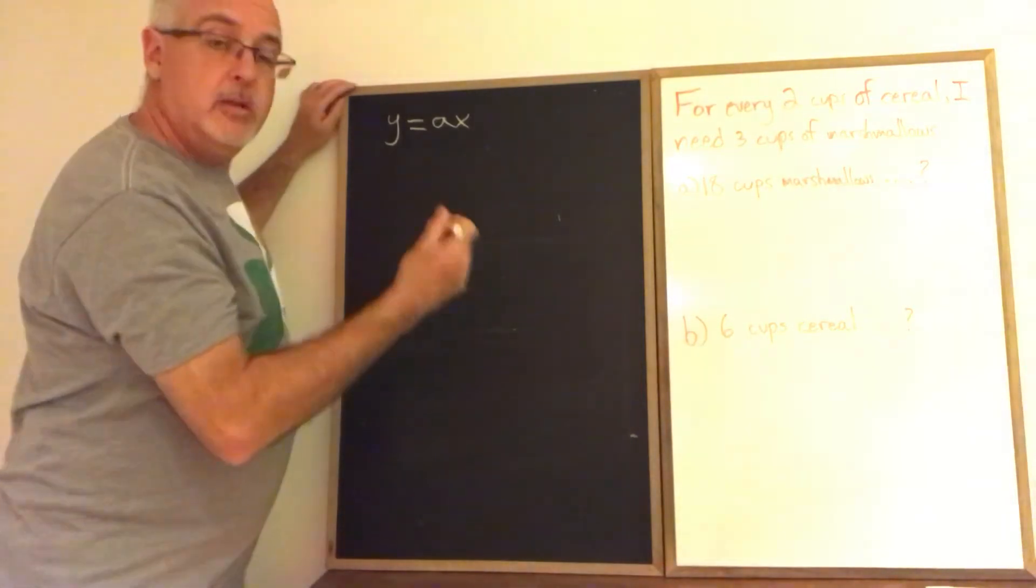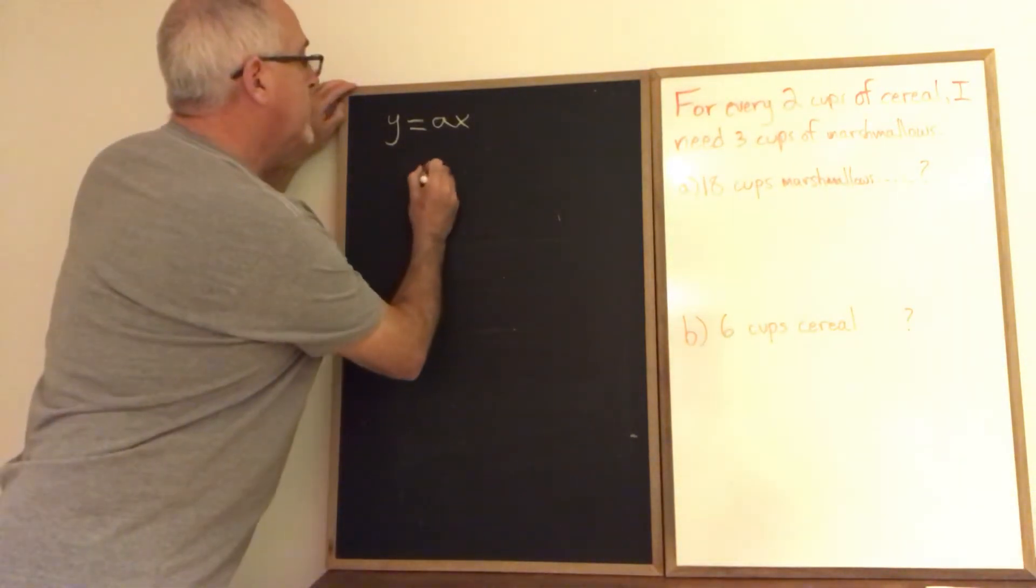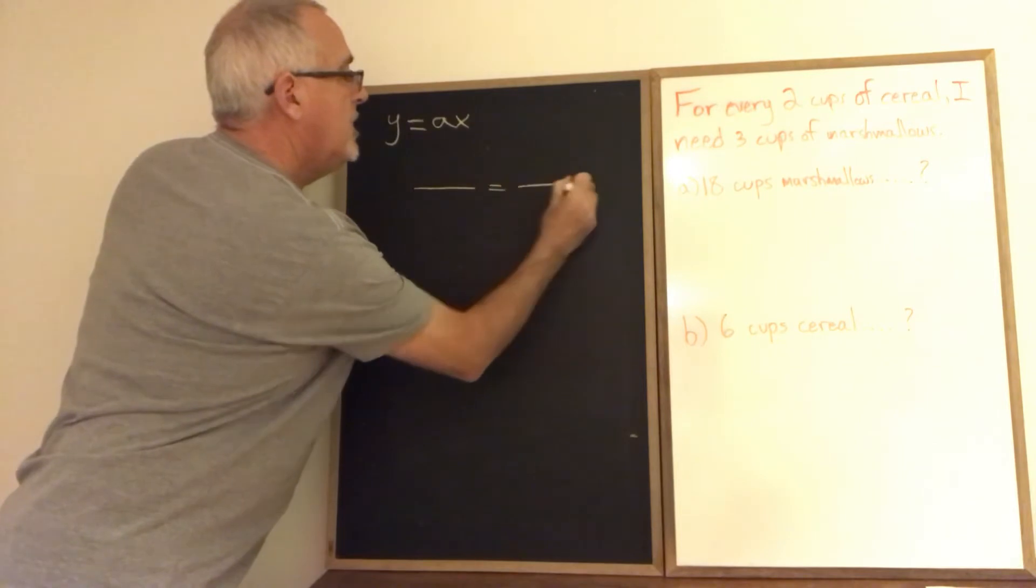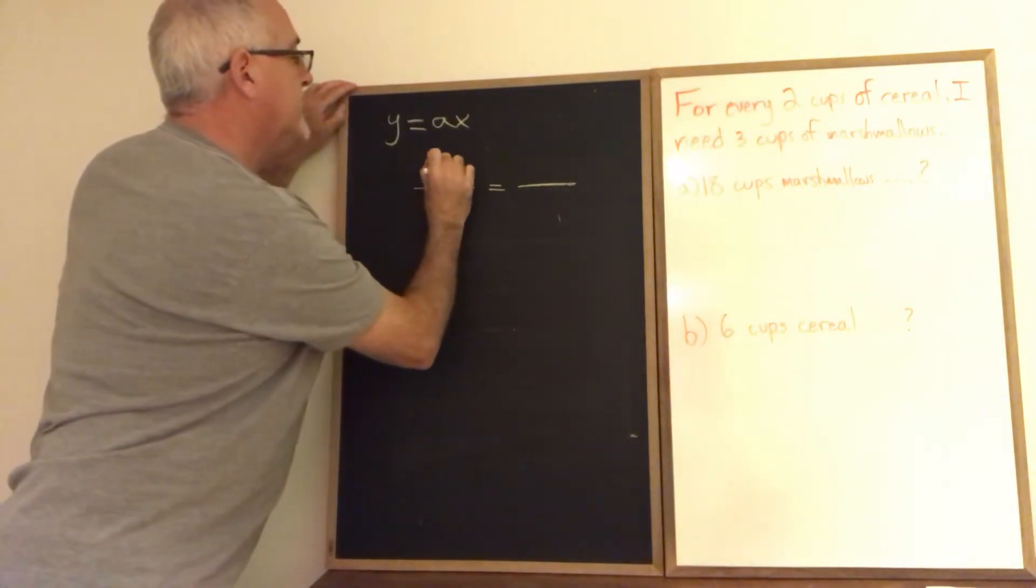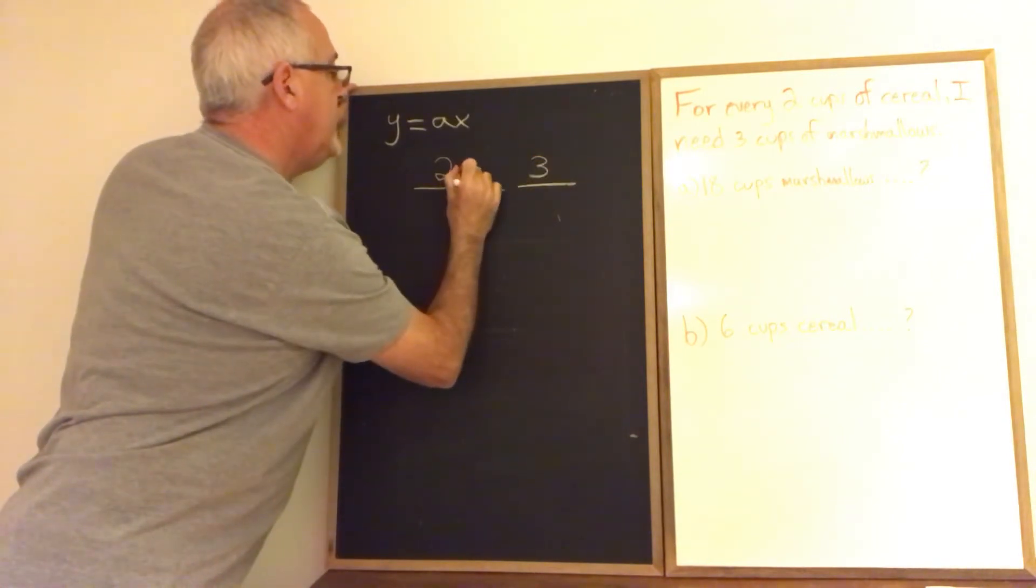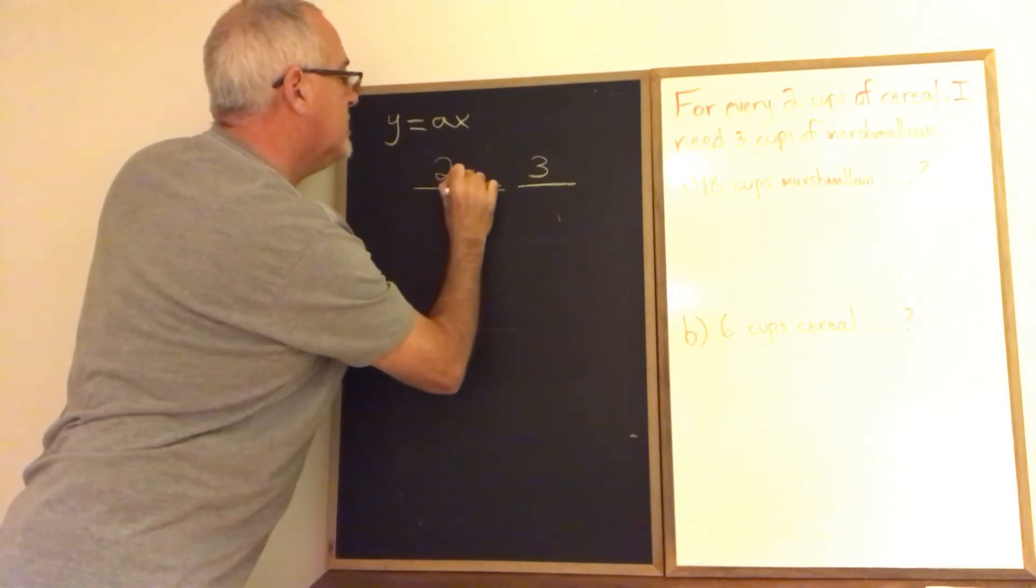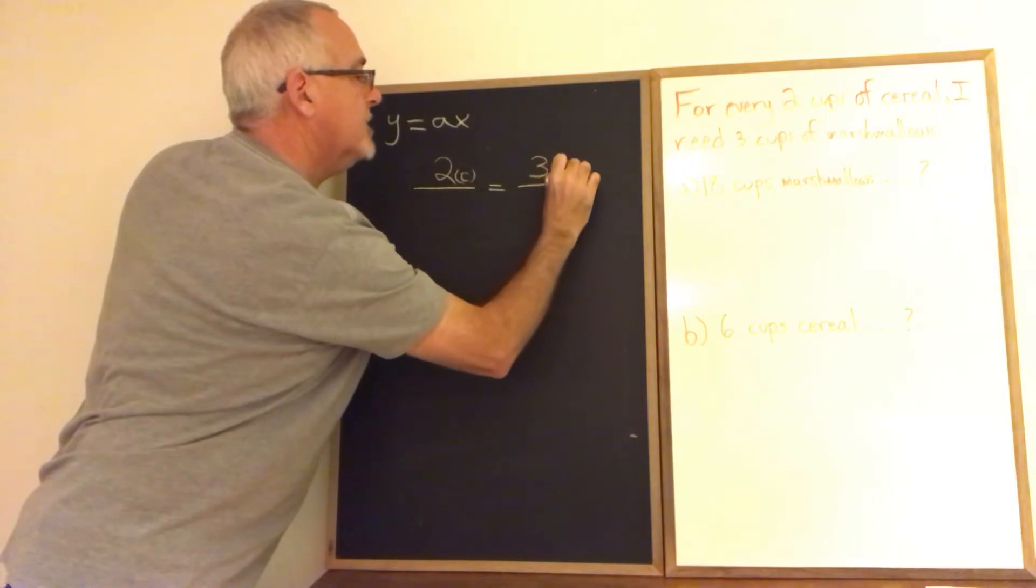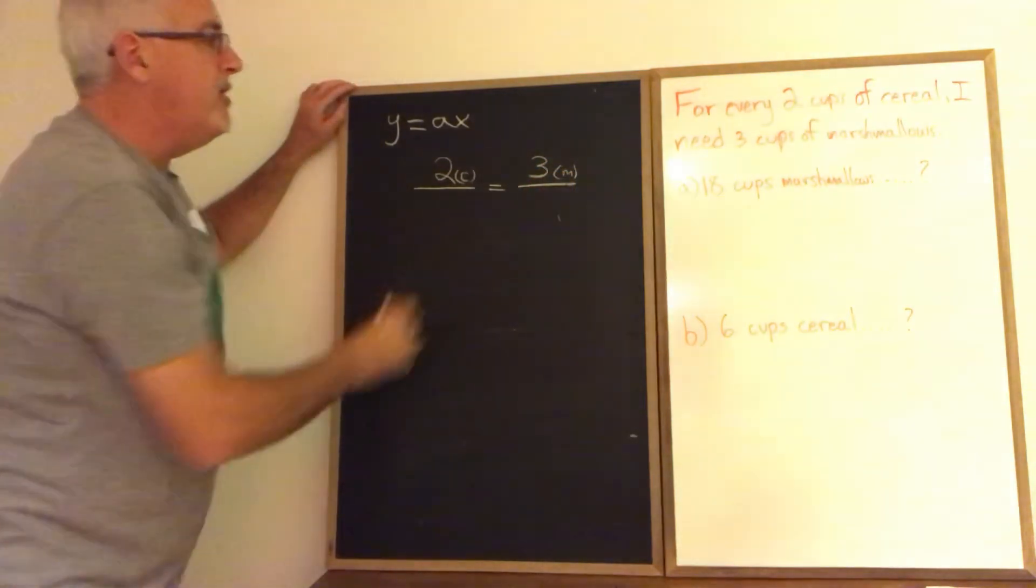So the first thing I'm going to do is use a proportion. I'm going to say for every two cups of cereal, I need three cups of marshmallows. I'll put a C in brackets and an M in brackets to help me remember what goes where in my proportion.